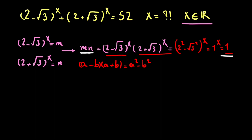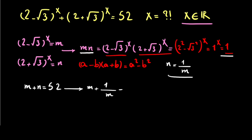So I can write n equals 1 over m. In the main equation we have m plus n equals 52, and we proved that n equals 1 over m. So we have m plus 1 over m equals 52.